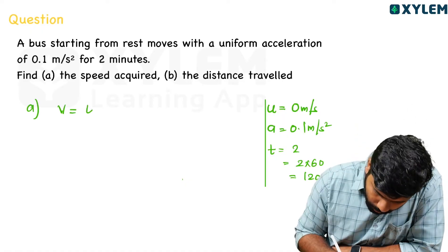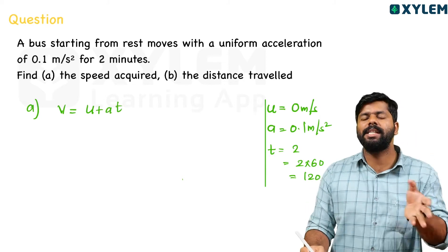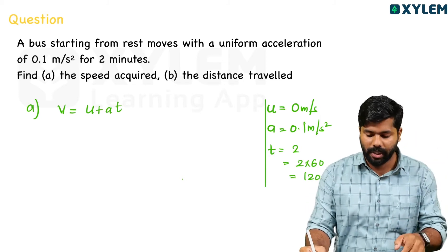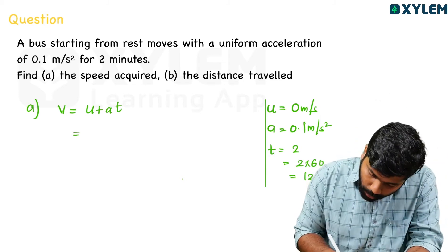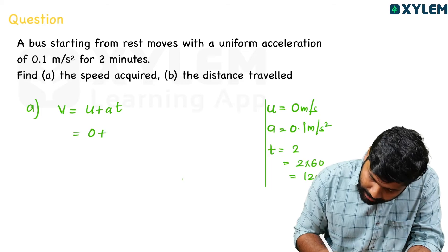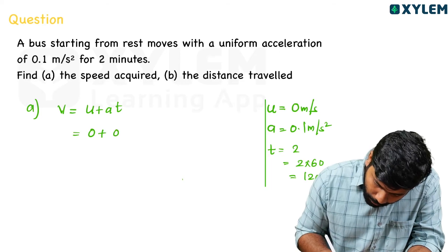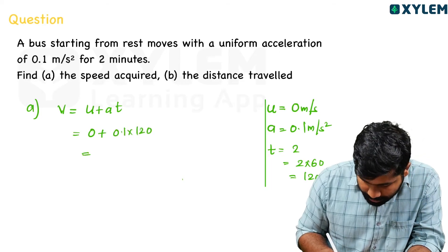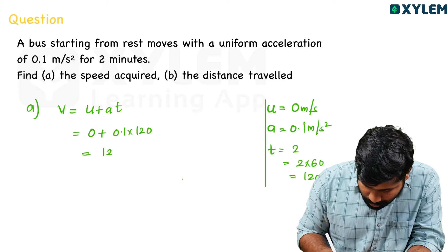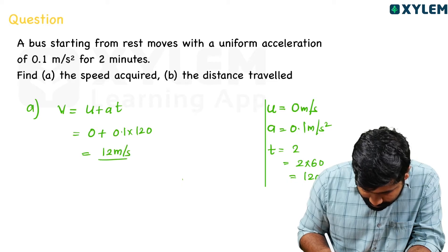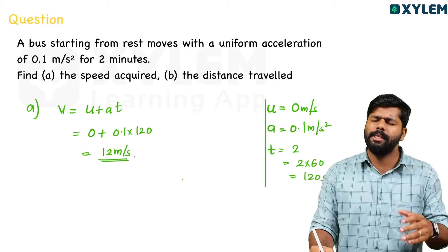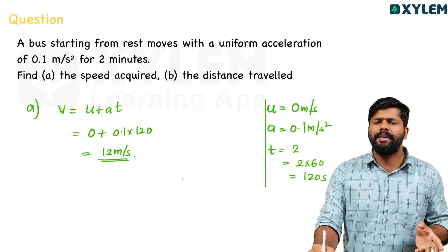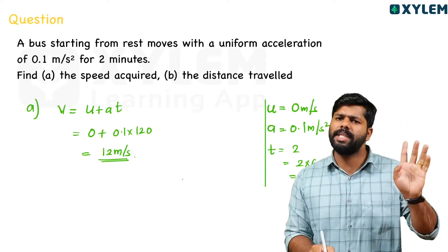Using the first equation of motion: v is equal to u plus a·t. Substituting: v equals 0 plus 0.1 into 120, which equals 12 m/s. That's the answer to the first part — simple and direct using the first equation.